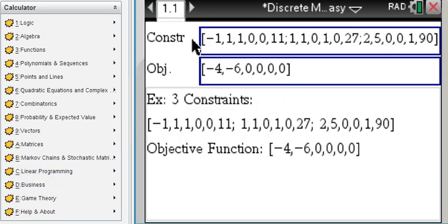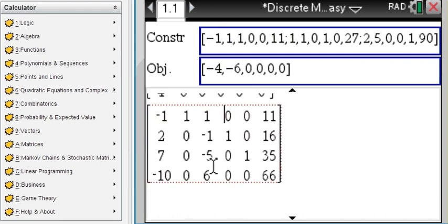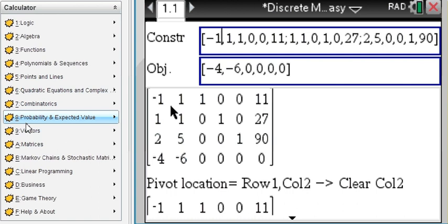Simplex algorithm, you enter the constraints in matrix format and your objective function right below it and then you scroll all the way up to see the